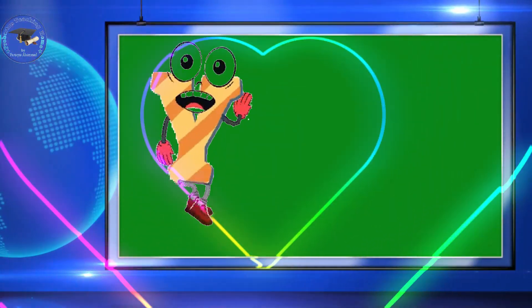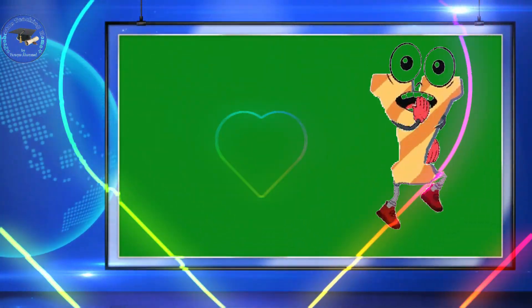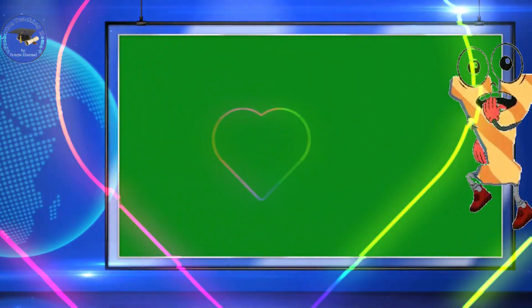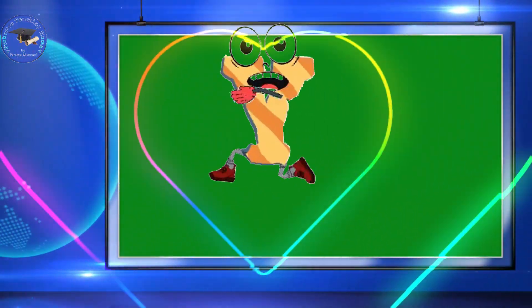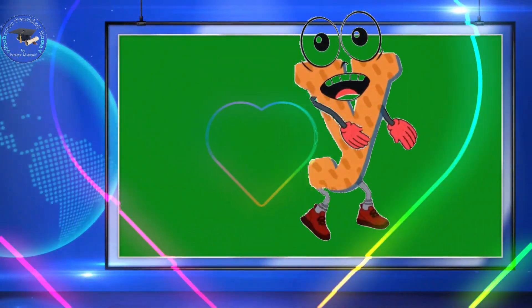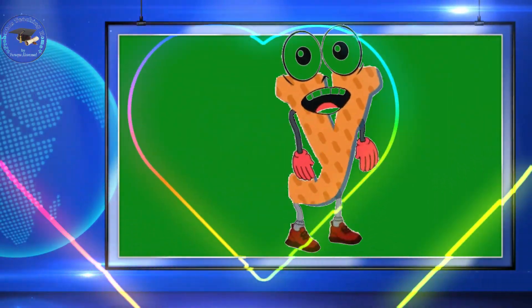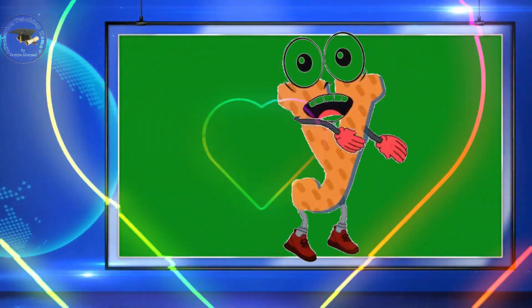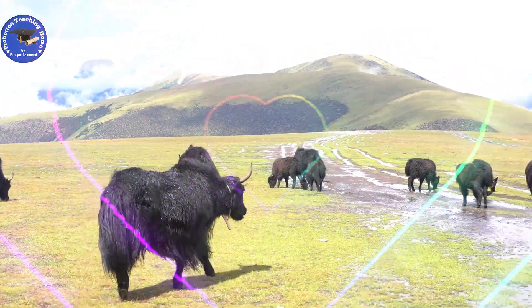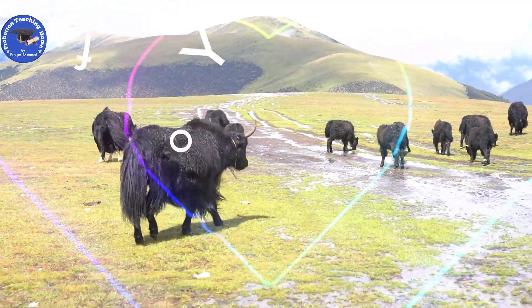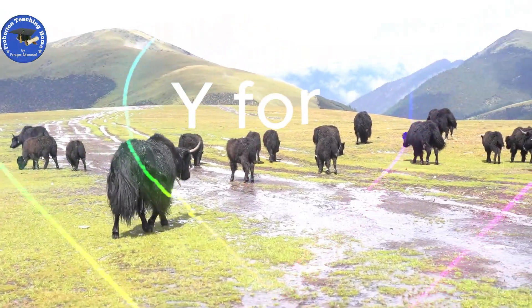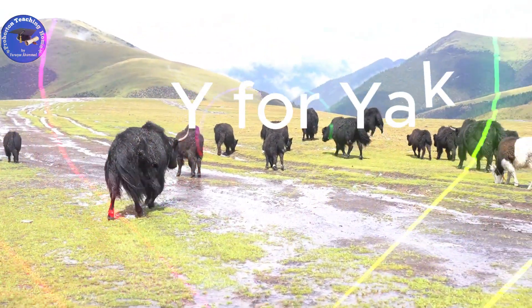Hi kids! I'm the letter Y — capital Y and small y. You spell my name Y. Y for yak — Y-A-K. Yak.